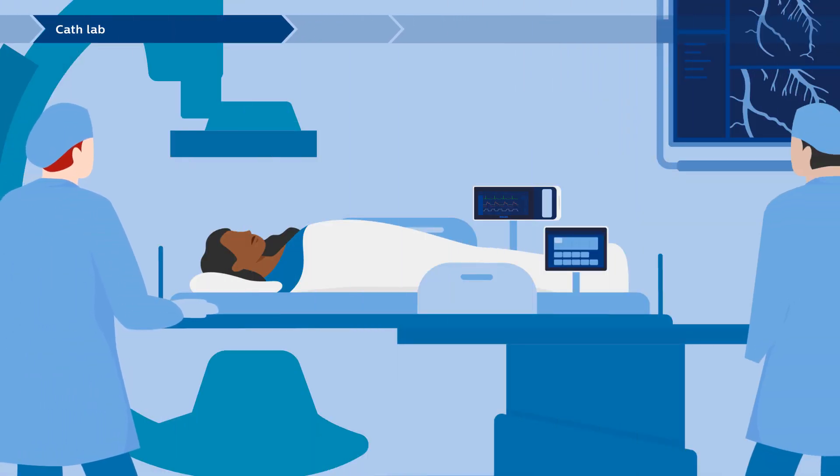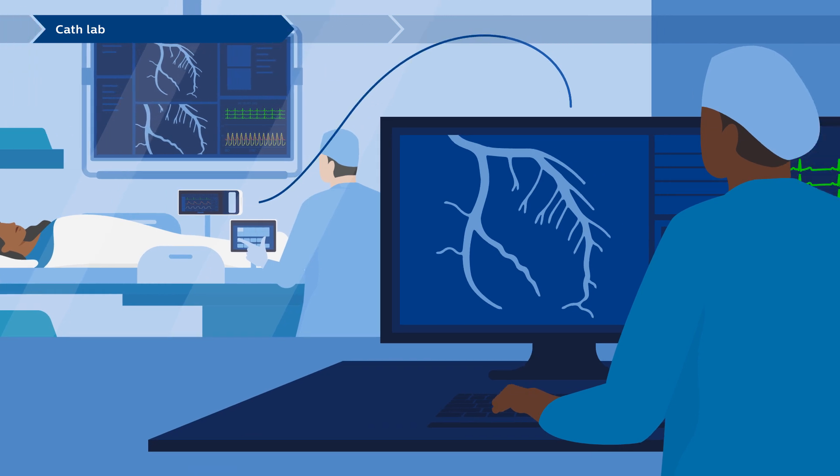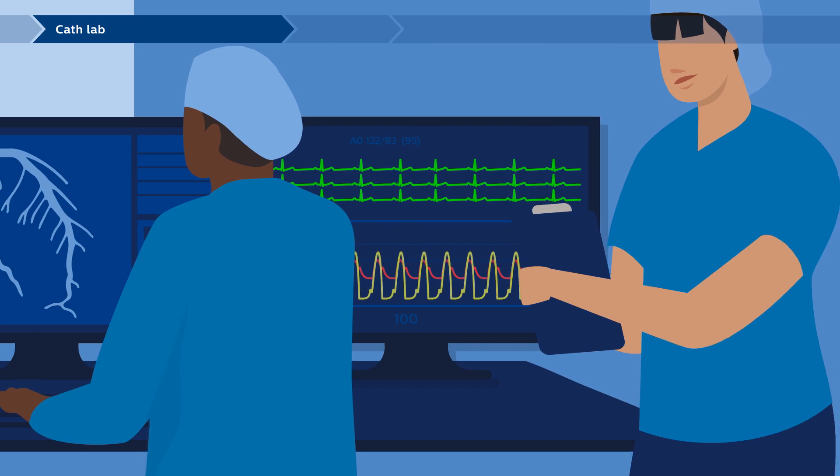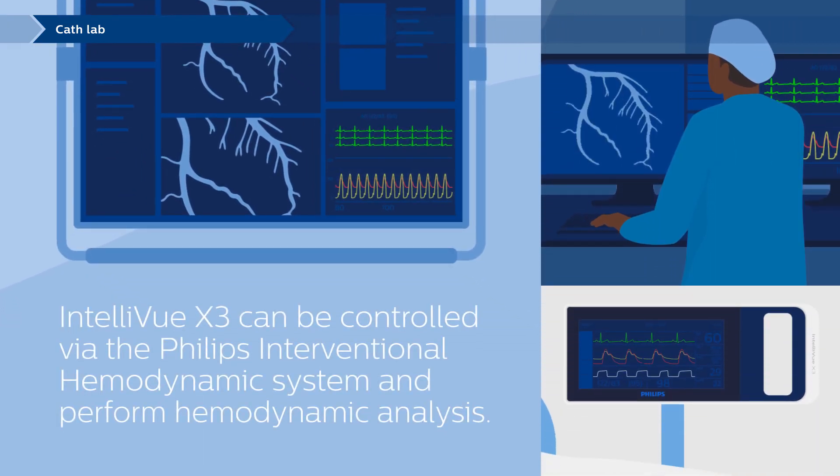Once the patient arrives in the cath lab exam room, the Intelliview X3 is docked into the exam table docking station. Patient demographics from the X3 are exchanged with the Philips Interventional Hemodynamic System to help safeguard against manual entry errors. Real-time measurement data from the X3 is shared with the hemo system for advanced hemodynamic monitoring.